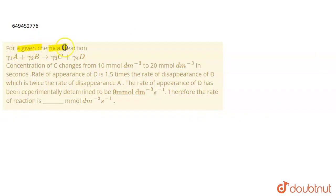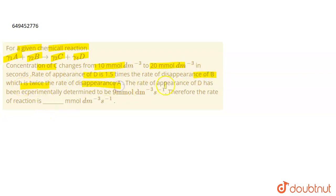The question is: for a given chemical reaction, γ1A + γ2B → γ3C + γ4D. The concentration of C changes from 10 mmol/dm³ to 20 mmol/dm³ in 10 seconds. The rate of appearance of D is 1.5 times the rate of appearance of D, which is twice the rate of disappearance of A. The rate of appearance of D is experimentally determined to be 9 mmol per dm³ per second.